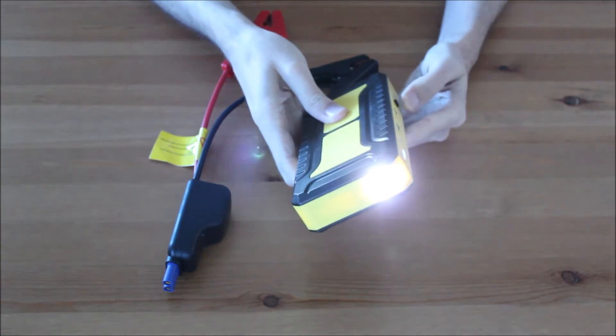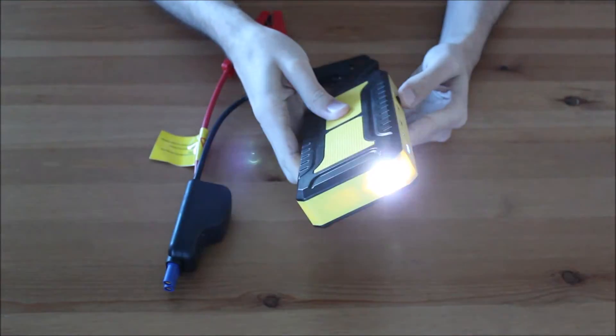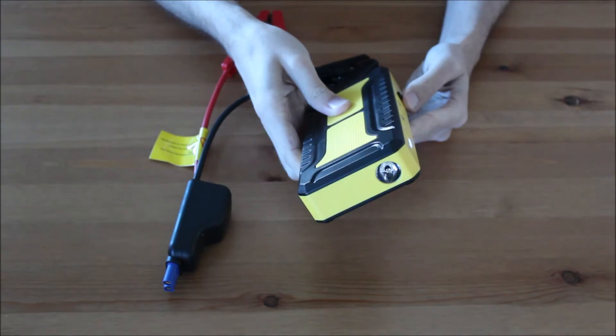The jump starter has a built-in LED flashlight featuring three different modes: SOS, strobe, and spotlight.